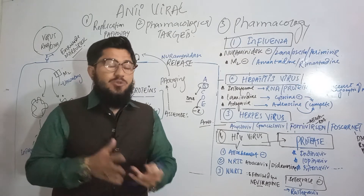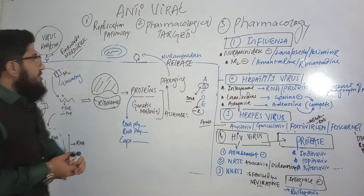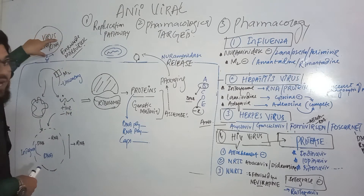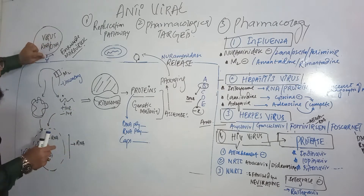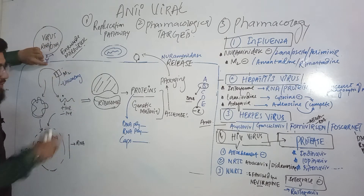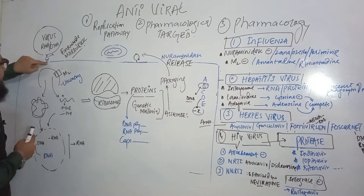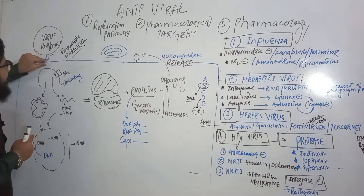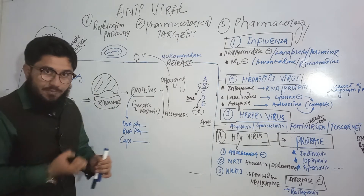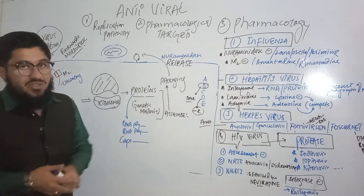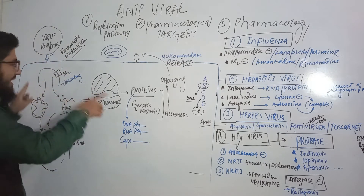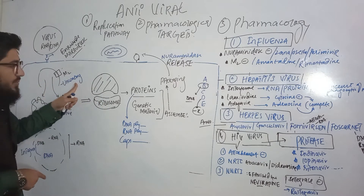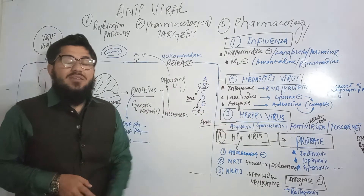Coming to the life cycle: the virus finds a cell. By means of its glycoprotein (gp) spikes, it binds to the host cell receptor. After attachment, endocytosis occurs and the virus is internalized — it gets inside the host cell. Once inside, the virus undergoes the process of uncoating.